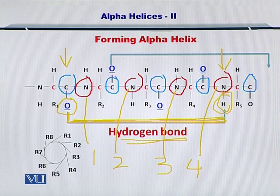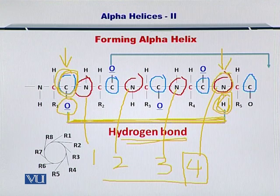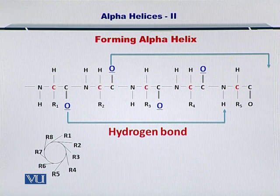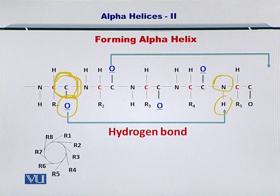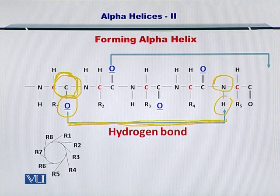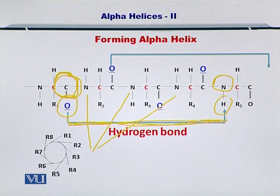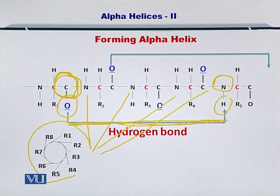So therefore, the C terminus binds with the N terminus hydrogen that is at the fourth position immediately following that C terminus. Let me elaborate this again. For a hydrogen bond to exist between oxygen and hydrogen of C and N terminus, the distance between them should be four N termini: 1, 2, 3 and 4.